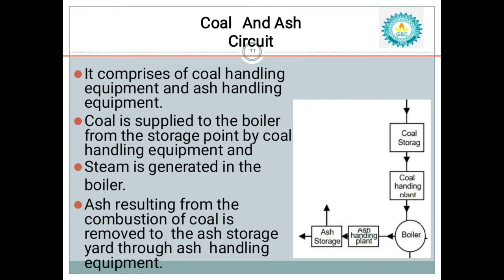The first circuit is the coal and air circuit. The coal is supplied from coal mines with the help of railroads and stored in coal storage. This coal comes in different sizes, but we need fine powder coal to be sent to the boiler. With the help of coal handling equipment, the coal is resized and finally we get a fine powder from the coal handling plant. After the coal handling plant, the coal is sent to the boiler with the help of belt conveyors.